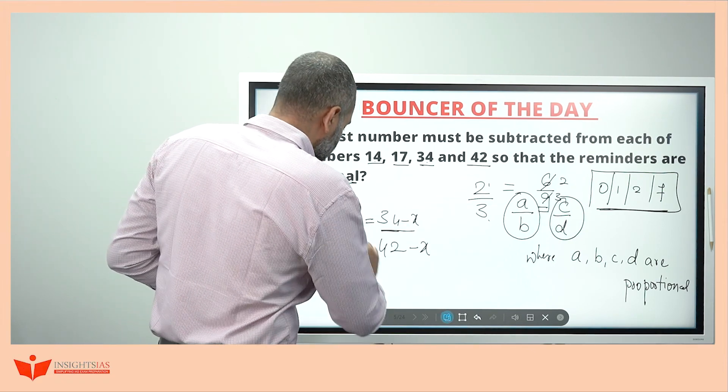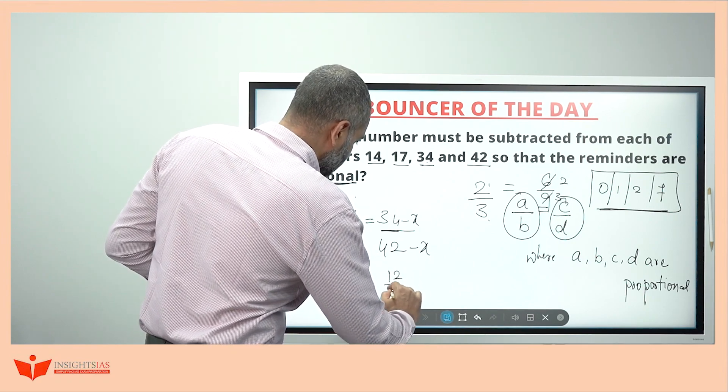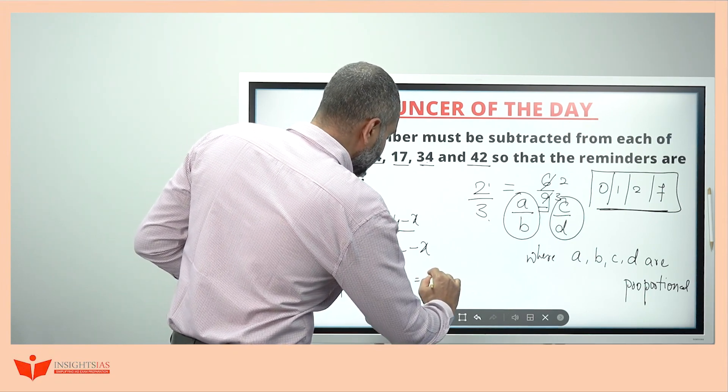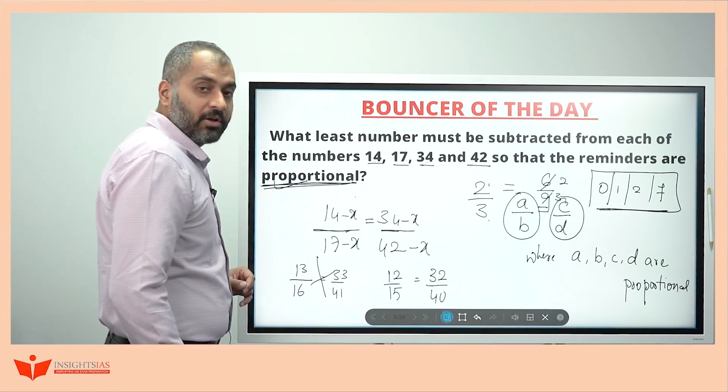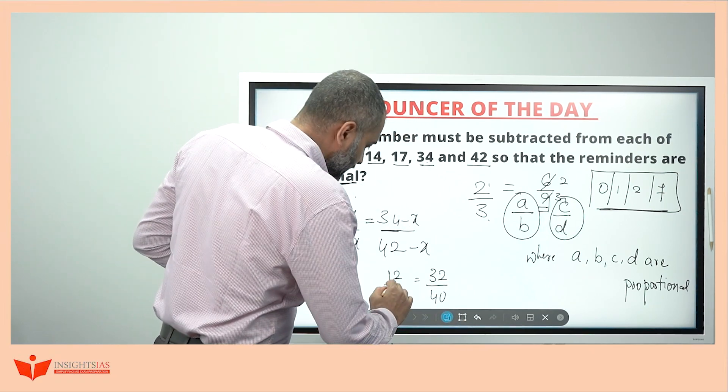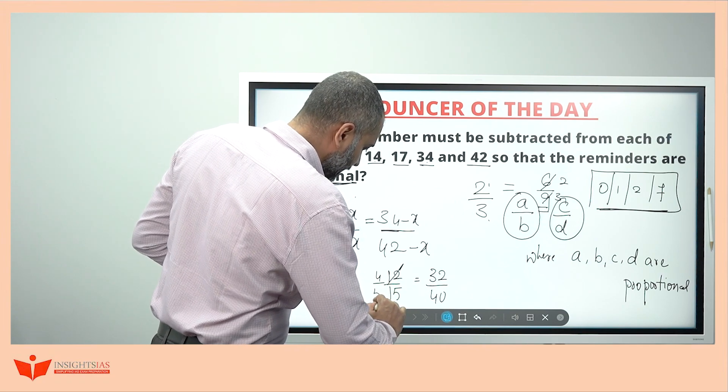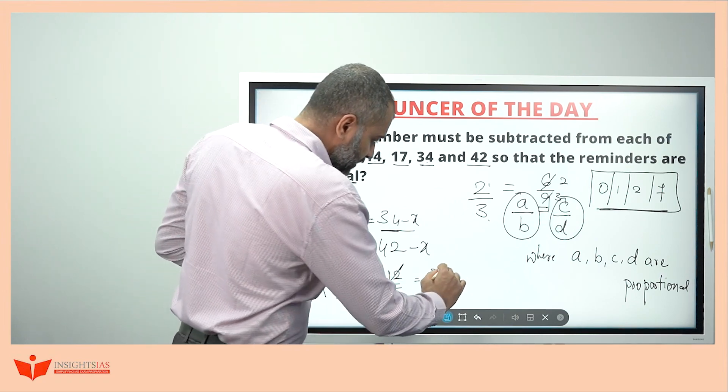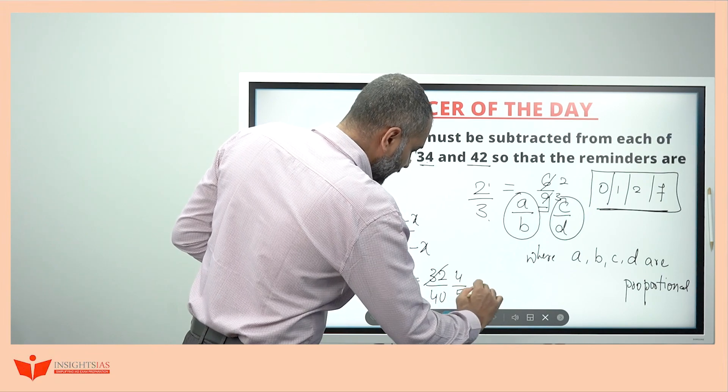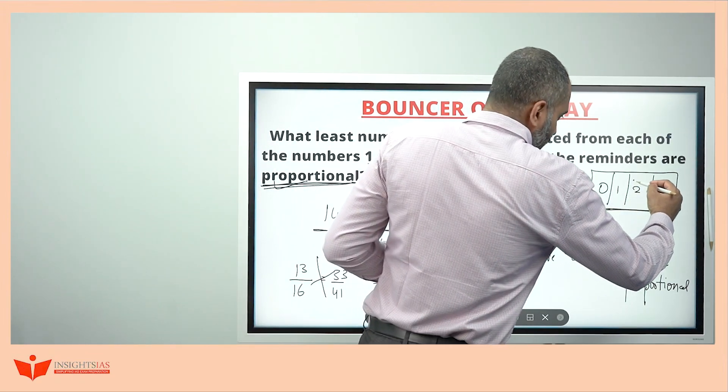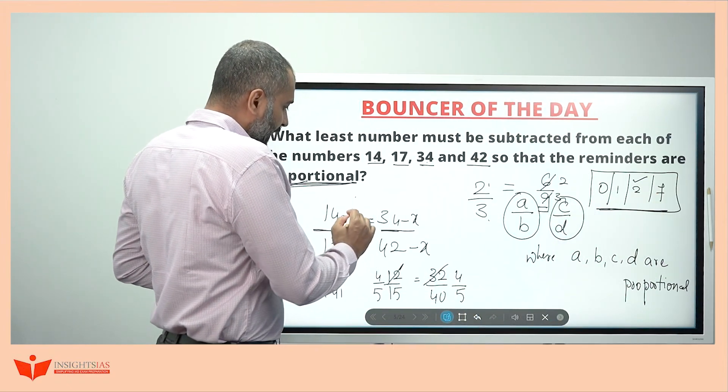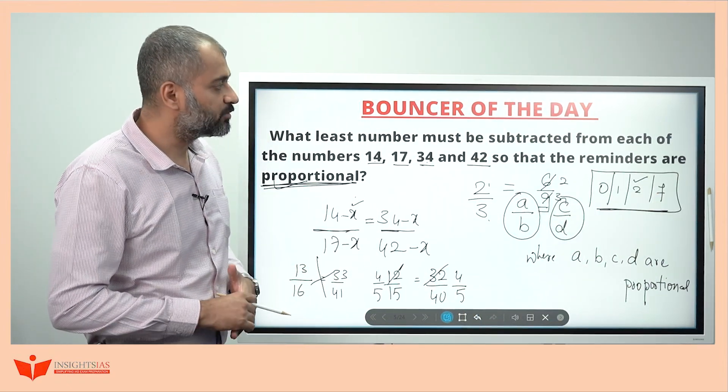If you put 2 here, so this becomes 12, this becomes 15, this becomes 32, this becomes 40. See, look here now. This is in the ratio of 4 is to 5. That is 3 into 4, 3 into 5. This becomes 4 is to 5. 8 into 4, 8 into 5. So if you put 2 at the place of x here, then this becomes proportionate.